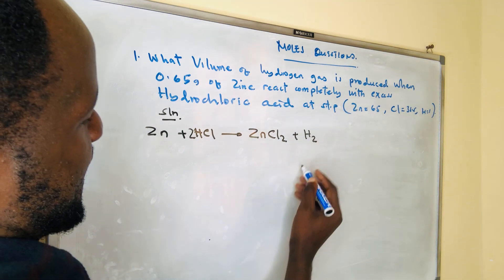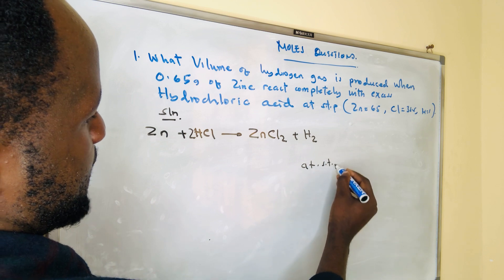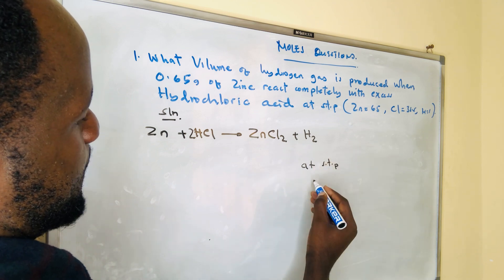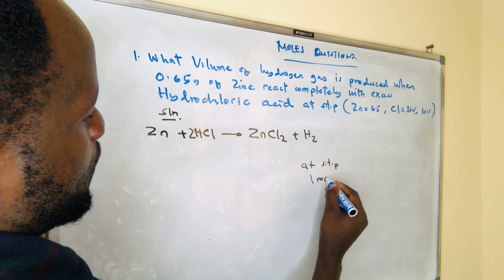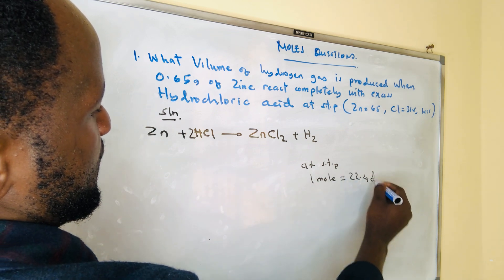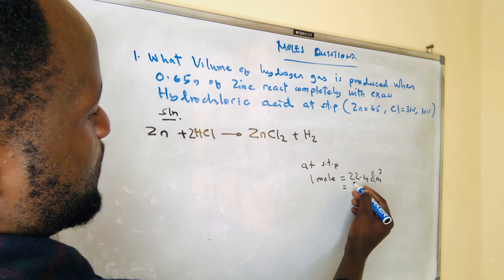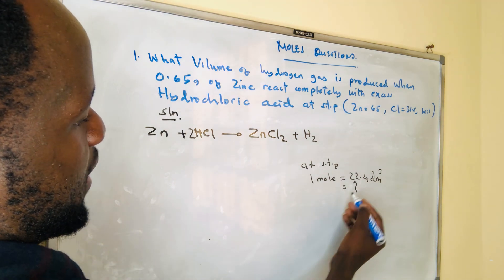Now you have to find the volume of hydrogen gas at STP. At standard temperature and pressure, one mole of gas occupies 22.4 DM³ volume. So to find the volume of hydrogen, we need to find the number of moles of hydrogen first.